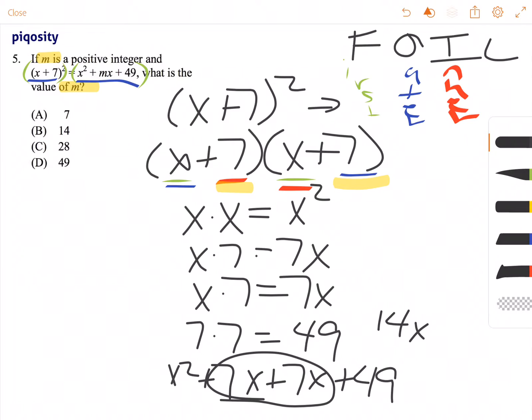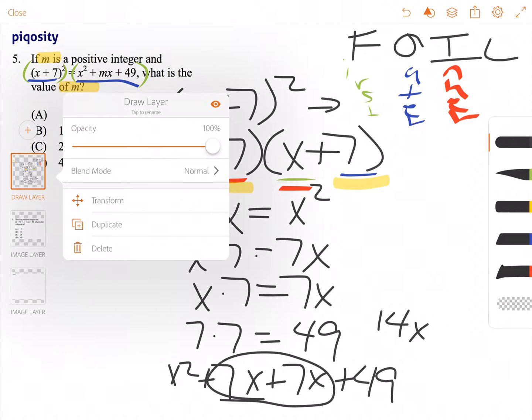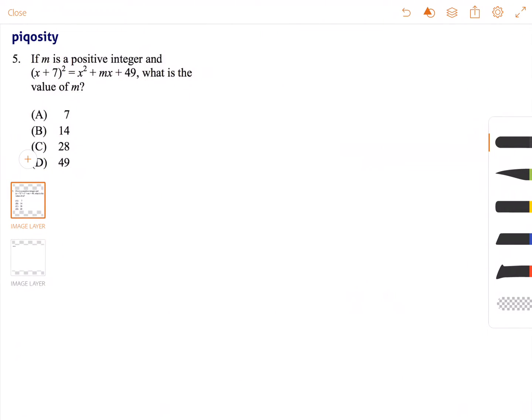So our new equation on the left hand side, let's clear this all up, is x² + 14x + 49.